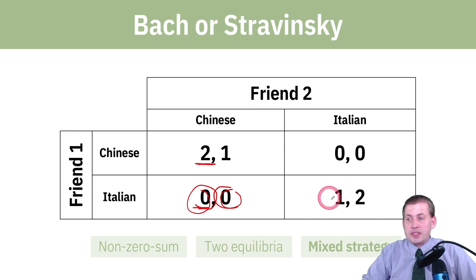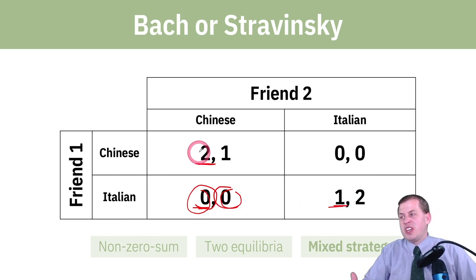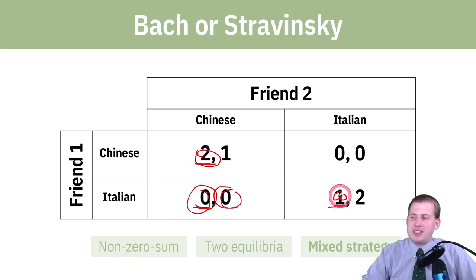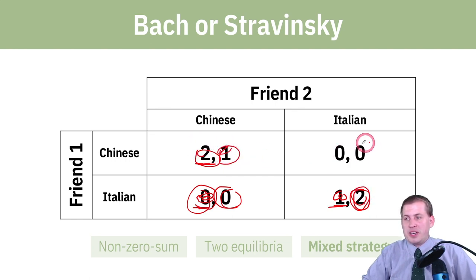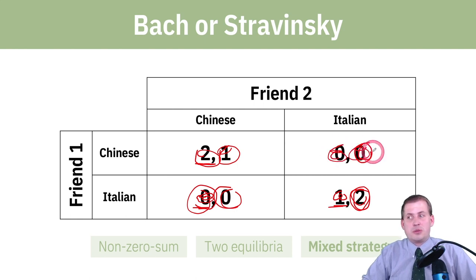If they both end up at the same place, friend one will get one happiness point because they're with their friend — but that's not as good as Chinese food, so they prefer the Chinese outcome. Friend two likes Italian food the most and gets two happiness points for that. They're okay with Chinese food. But if they end up at the Italian restaurant and their friend isn't there, then that's super sad, and everybody's worse off in those situations.